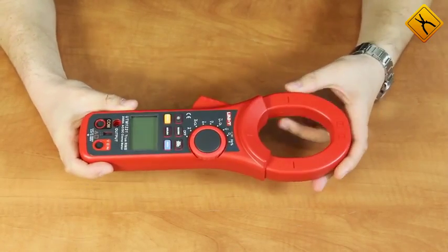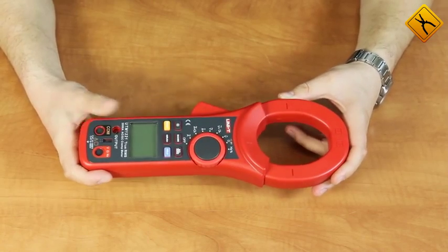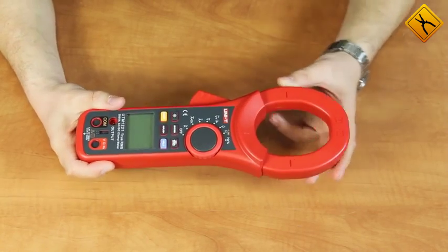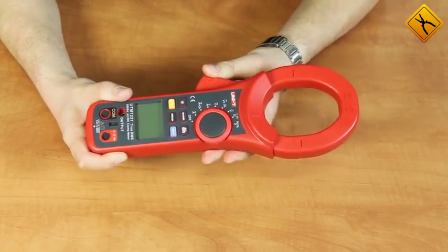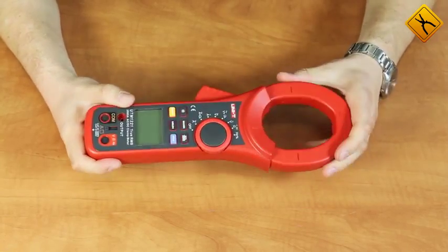However, it is not surprising as the meter measures AC and DC current up to 2000 Ampere. The maximum diameter of the measured conductor is 60 mm.